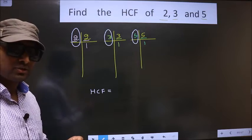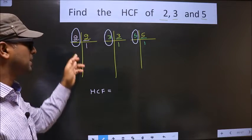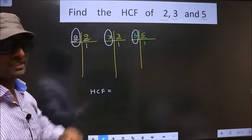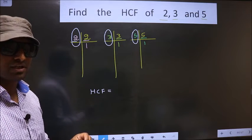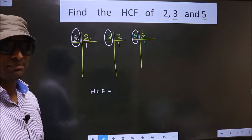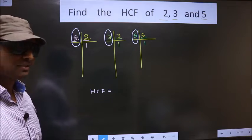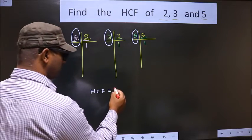That means we don't have any number present in all the three places. Whenever no number is present in all the three places, your HCF will be 1.